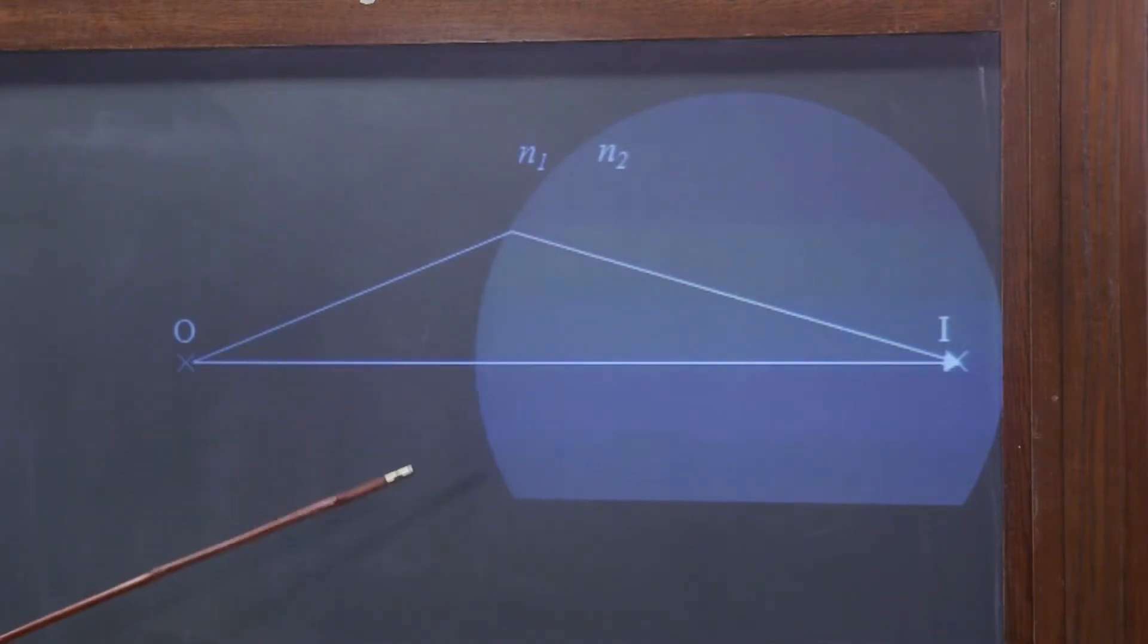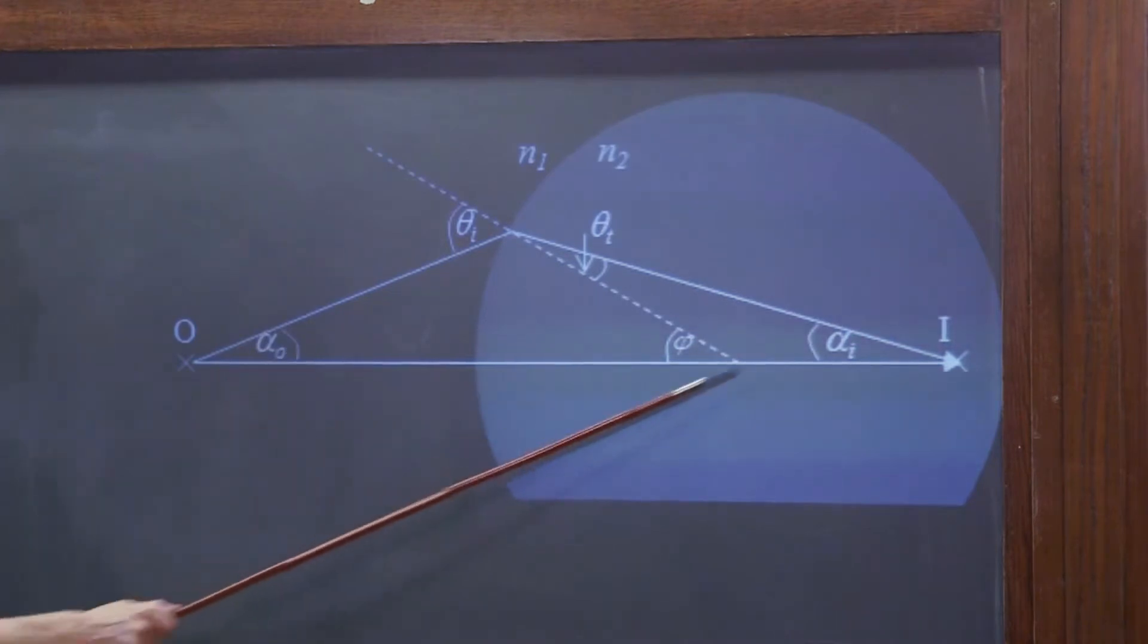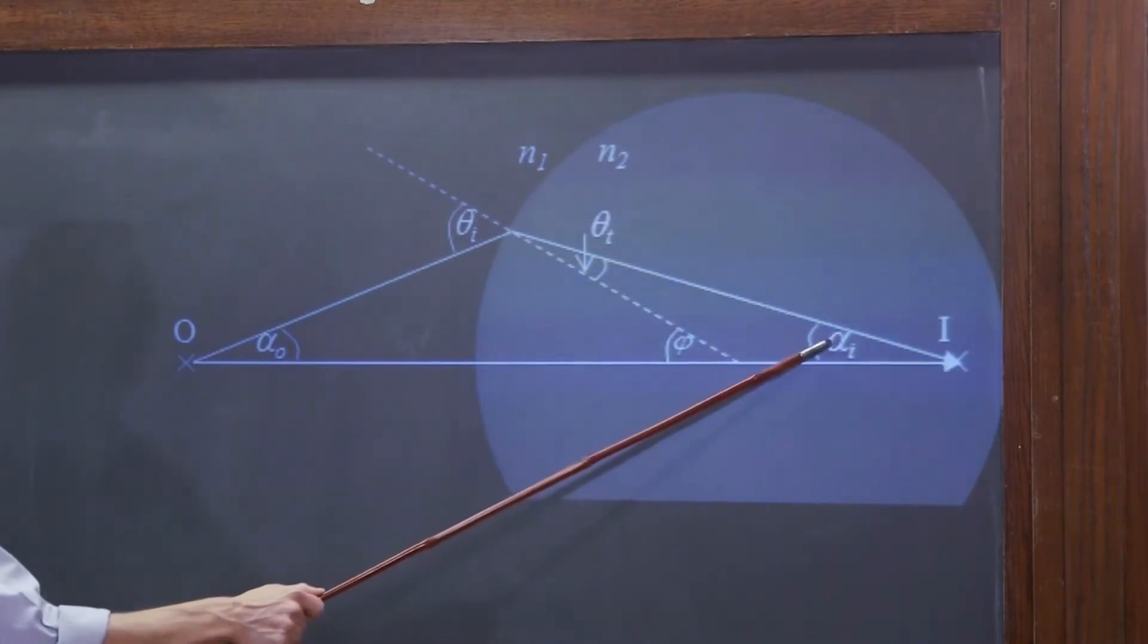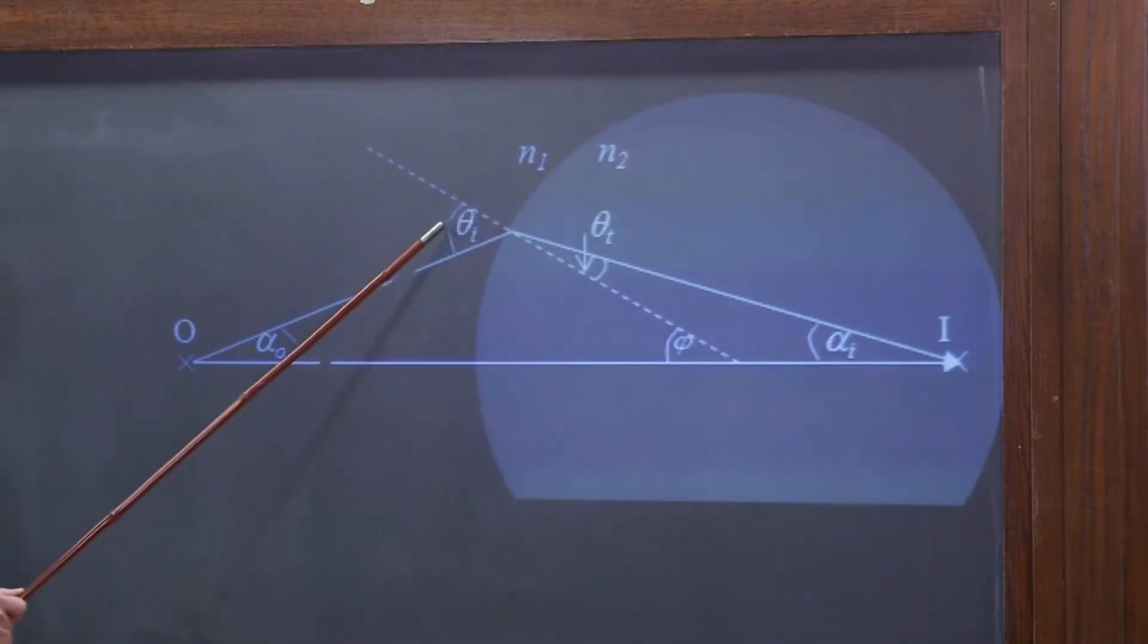So to get started, we have to think about five angles. The two rays make a triangle, and you've got the incident angle, and I'm sorry, the object angle here between these two rays and the image angle of the two rays coming together.